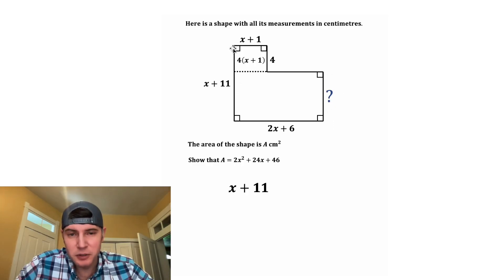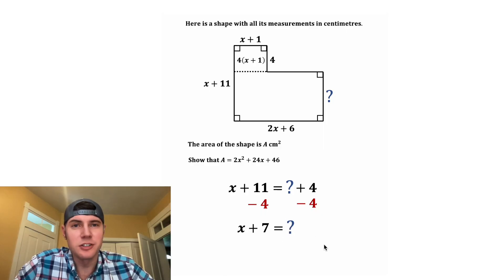We can say this entire height, x plus 11, is going to be equal to this question mark distance plus the 4, because they're both the height of the original figure. From here we can subtract 4 from both sides, and we get x plus 7. And then these two 4s cancel, leaving us with just the question mark. This question mark is equal to x plus 7.